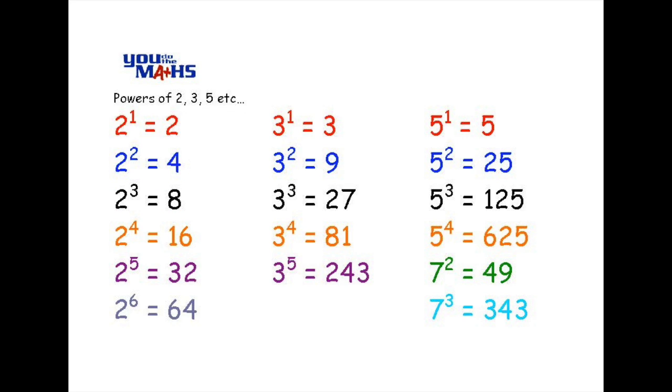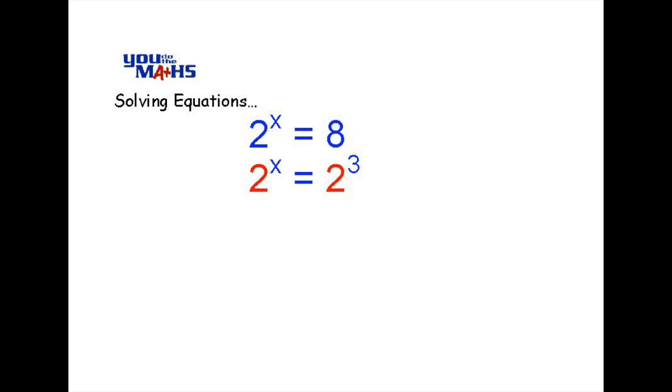So that's what we're going to use in our equation to help us solve for values of x. So our first step is to rewrite 8 as 2 to the power of 3. We can see here that we've got a common base of 2 and now we can equate the indices because the bases are the same. So the solution for this equation is x equals 3.